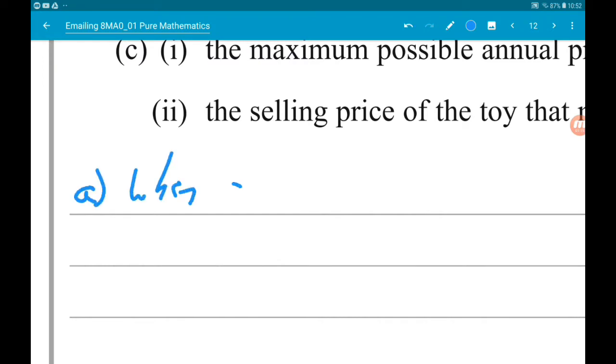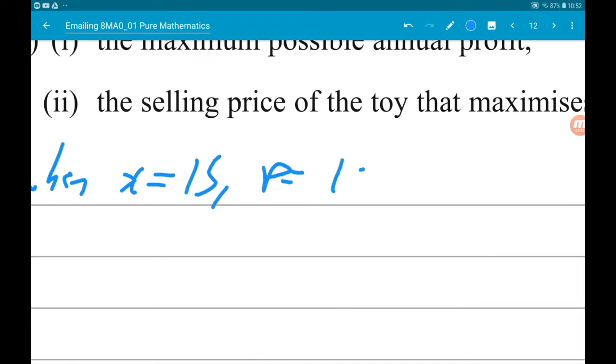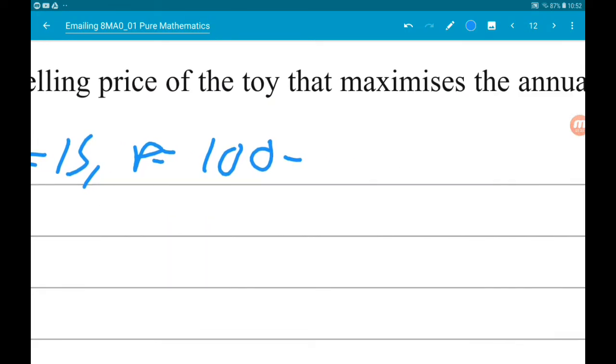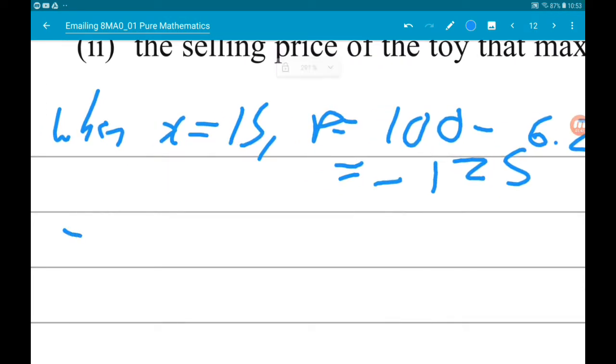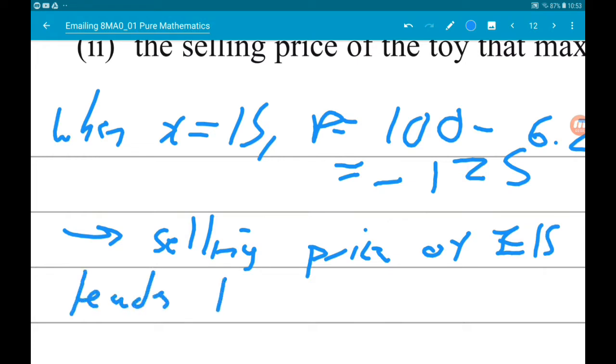So when x is 15, p is 100 minus 6.25 times 15 minus 9 squared. Now, if you plug that into your calculator, you will get minus 125, which means a selling price of 15 pounds leads to a loss for the company.